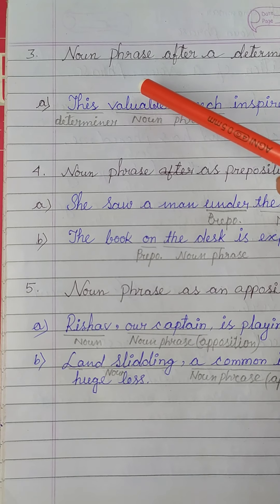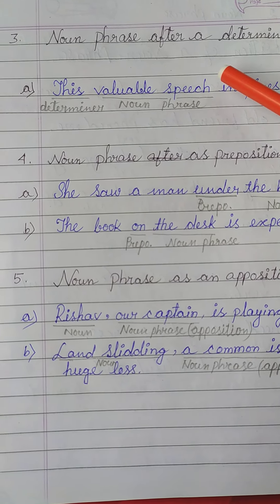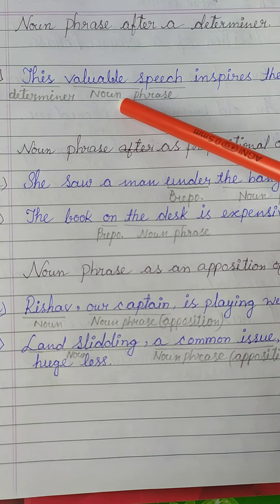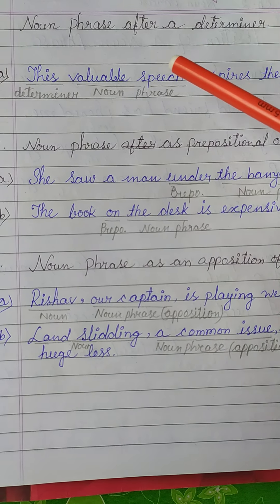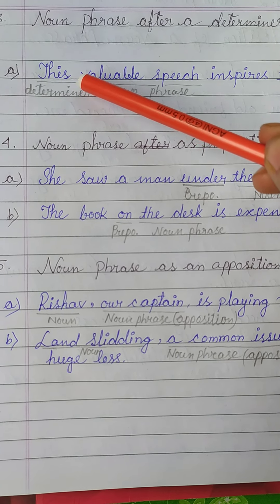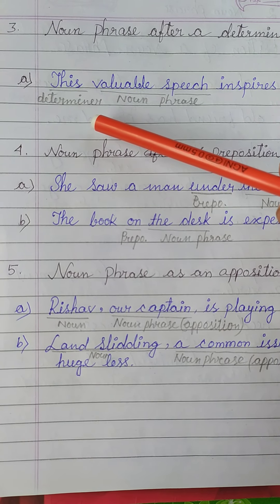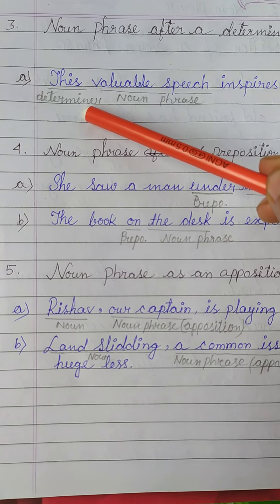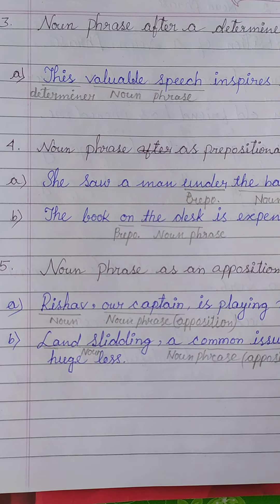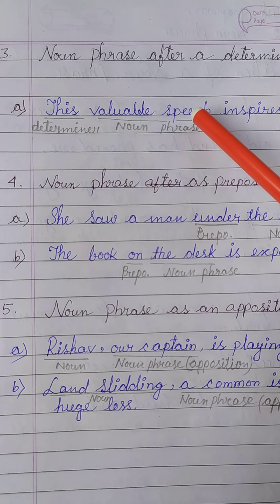Number 3: Noun Phrase after a determiner. We can use a Noun Phrase after a determiner. For example: 'This valuable speech inspires them.' Here, 'this' is a demonstrative and also a determiner. After this determiner, the Noun Phrase 'valuable speech' is used.